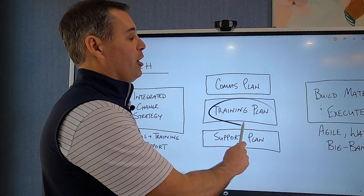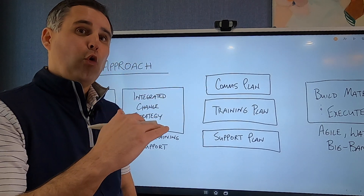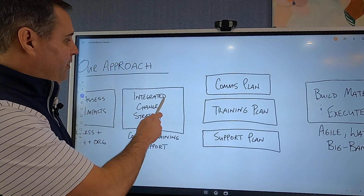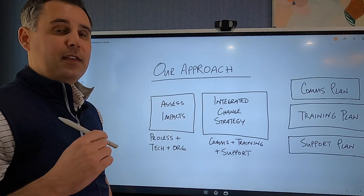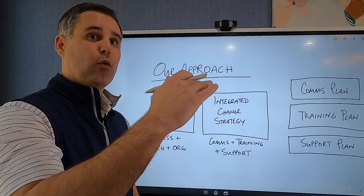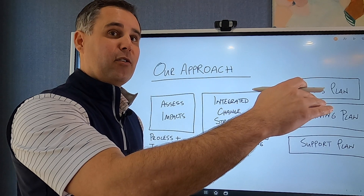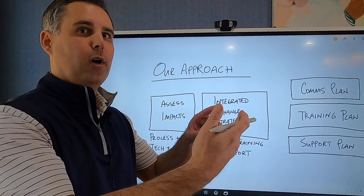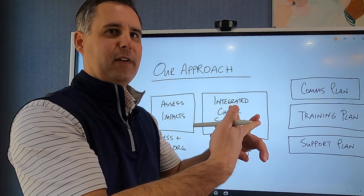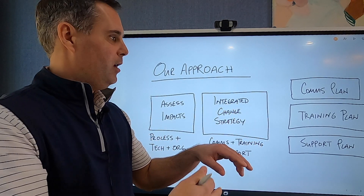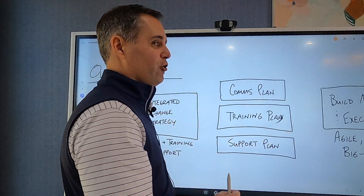Similarly, the training plan is broken down by stakeholder groups based on the impact assessment. For each group where the process is changing, you develop training materials — whether it's a video, an updated operating procedure, or a manual — and all of that is laid out in detail in the training plan.